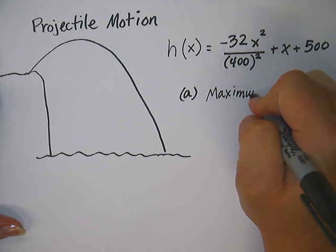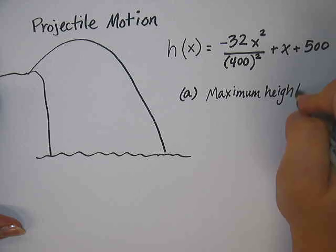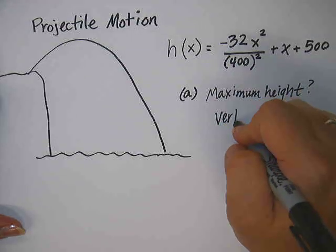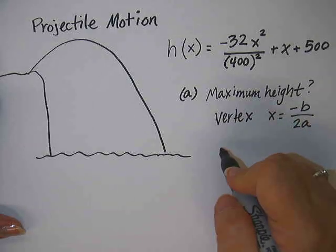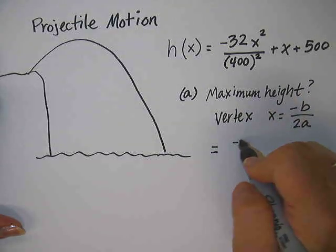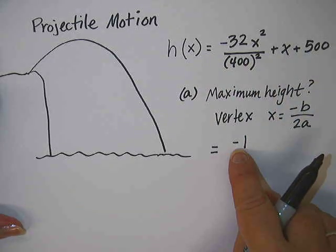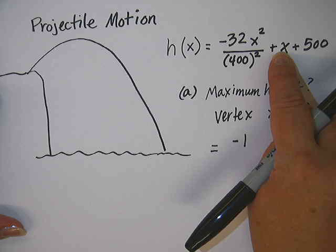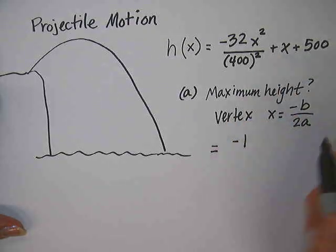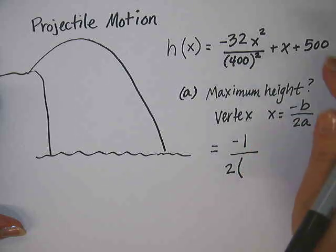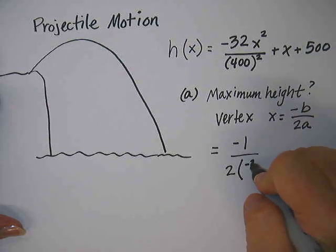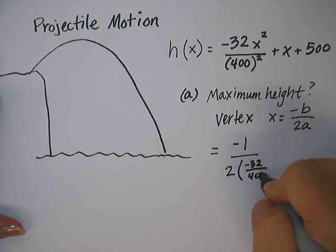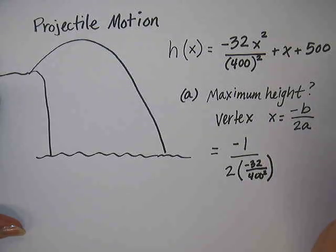So that just means we're finding the vertex. So if you will recall, to find the x value of the vertex, we can use the formula negative b over 2a. So if we go ahead and plug our values from our function into this, so b is 1, it's the number right next to x here, so our formula is negative b, so negative 1, over 2 times a, and a is this entire number that's with our x squared. So the entire negative 32 divided by 400 squared.